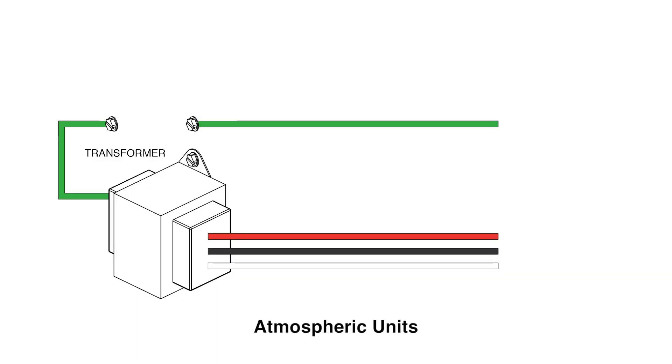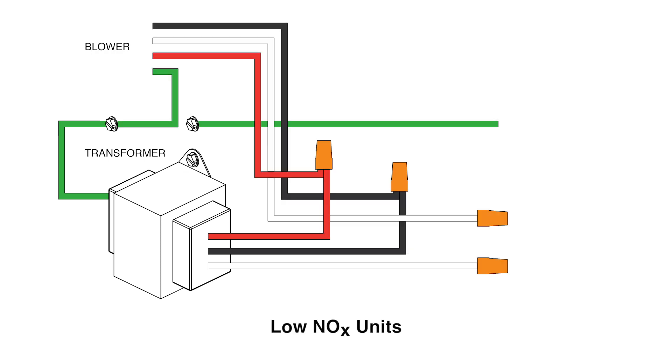You will find four wires coming from the right side of the transformer: black, white, red, and green. On LoNox models, you will also find these same colored wires coming into the box from the left. These lead to the relay which powers the blower.